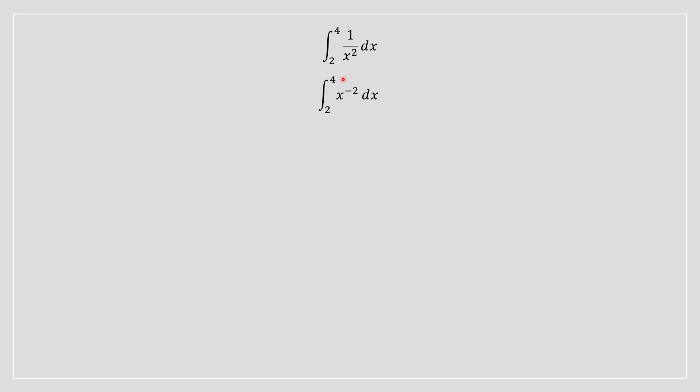So the first thing I want you to consider is ignore the bounds. Ignore the four and ignore the two. Solve for the integral as is.